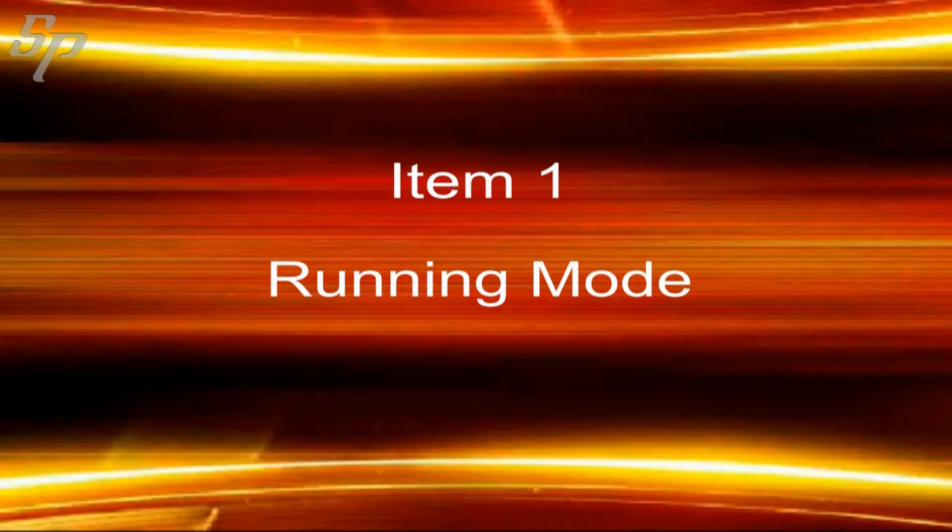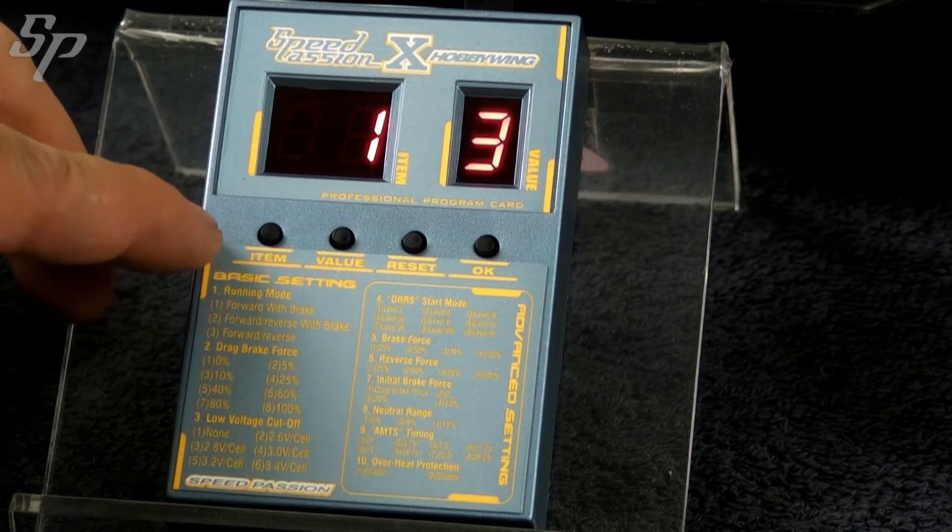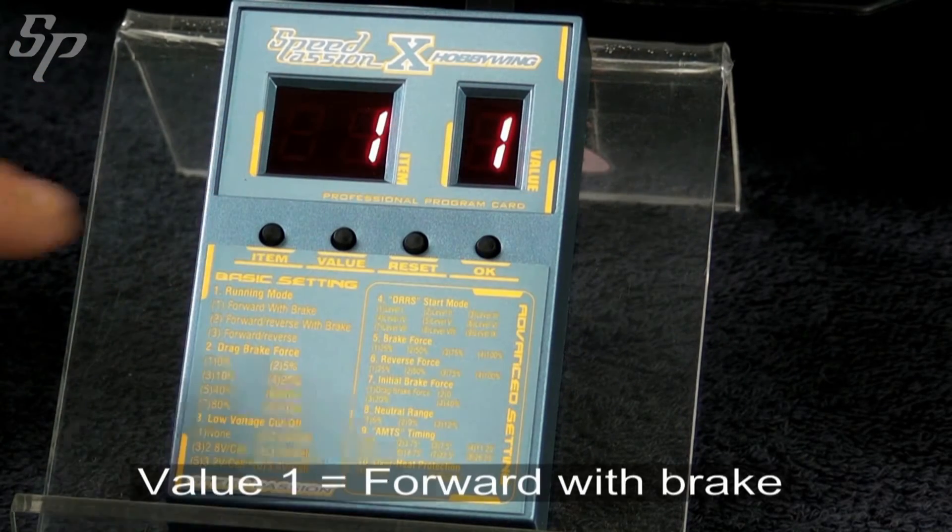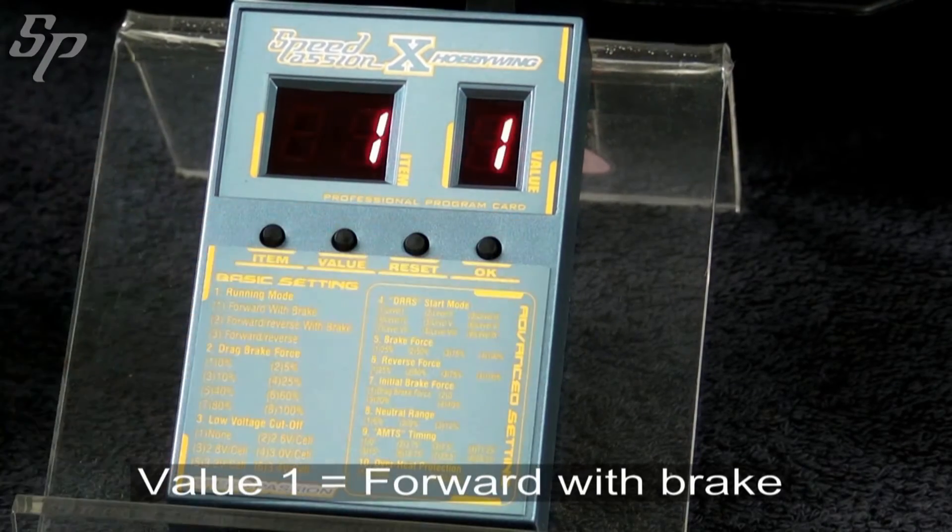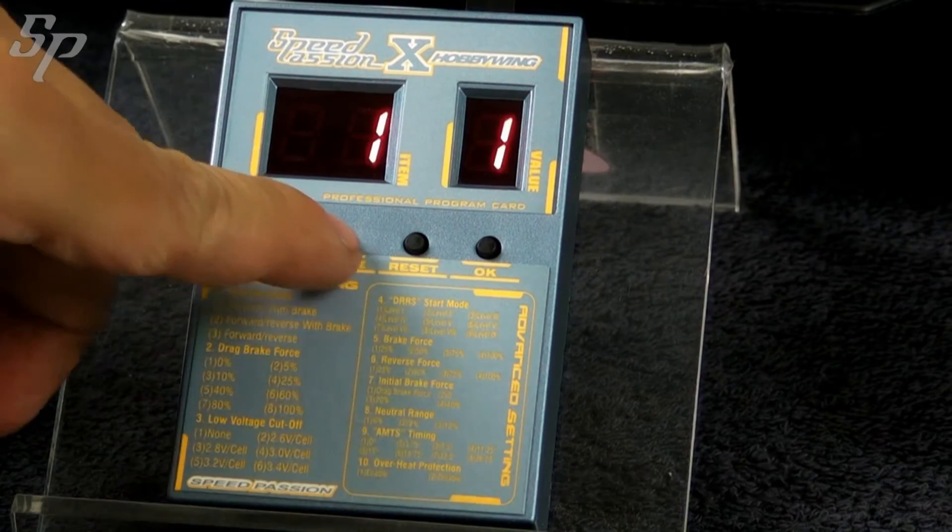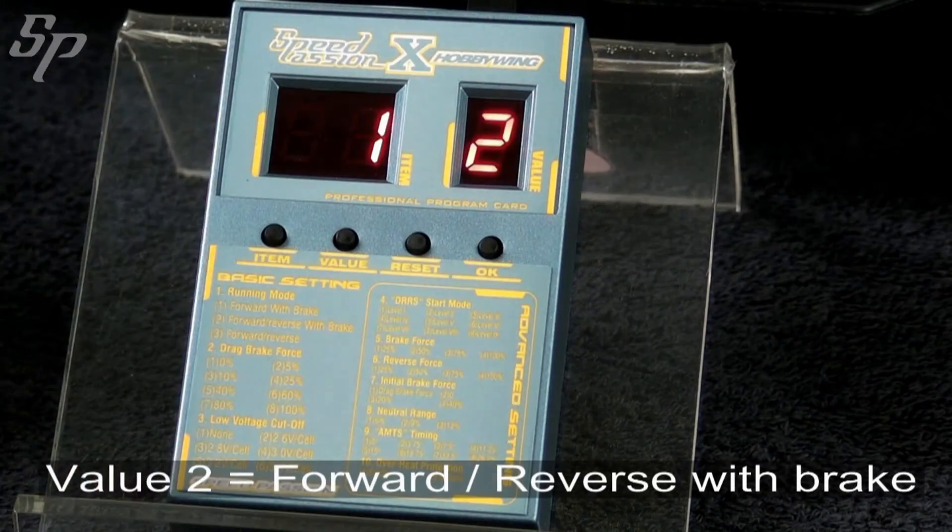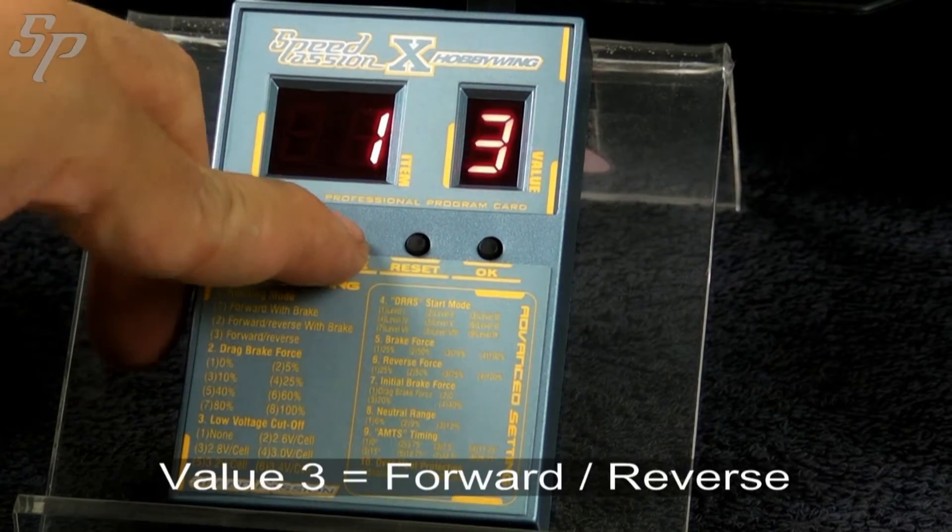Let's talk about item 1. Item 1 is the running mode. The possible choices are shown on screen. Once you set the value, be sure to press OK to confirm.